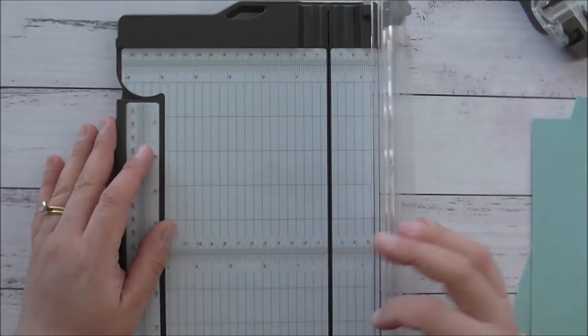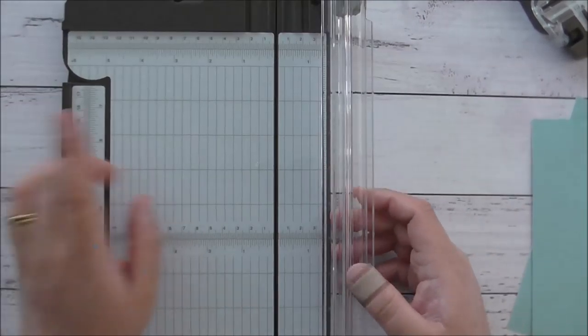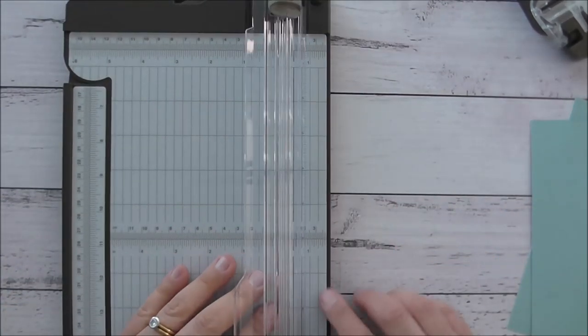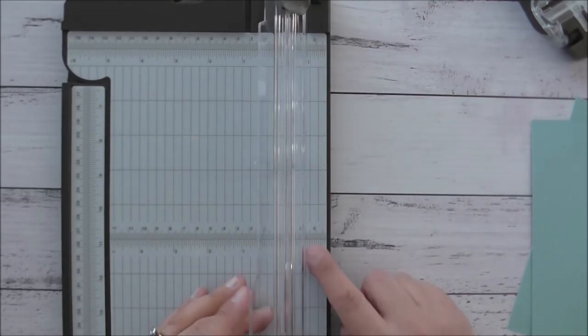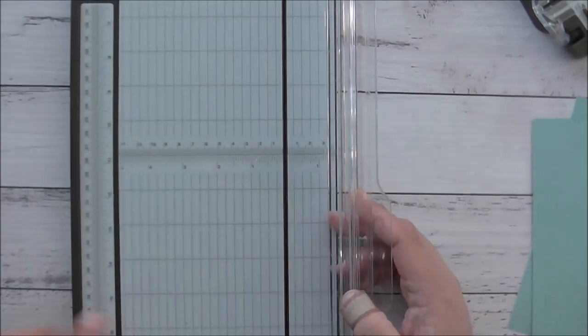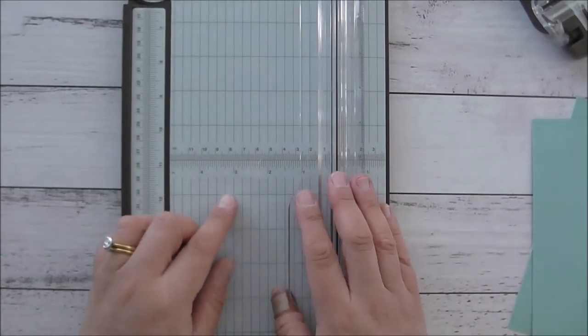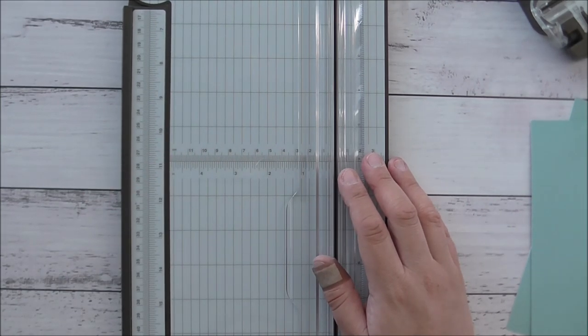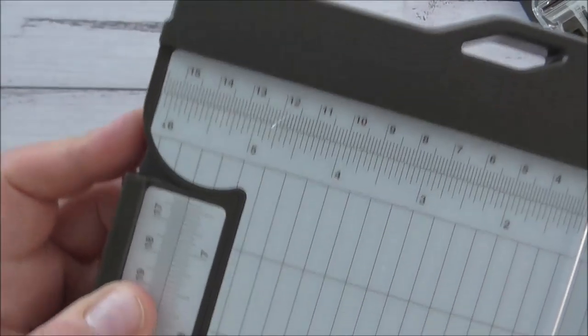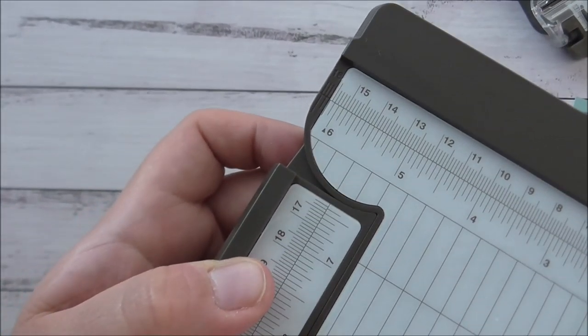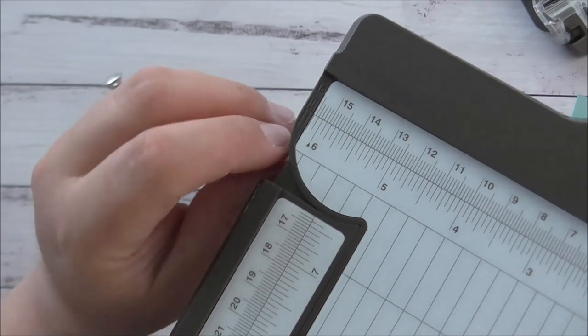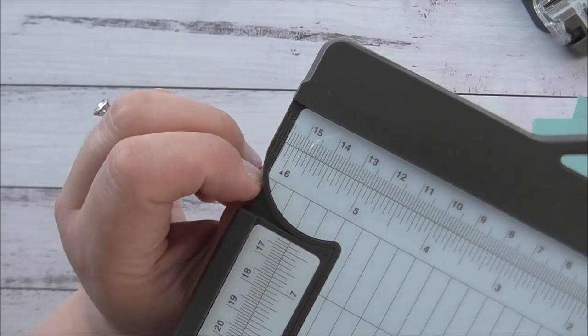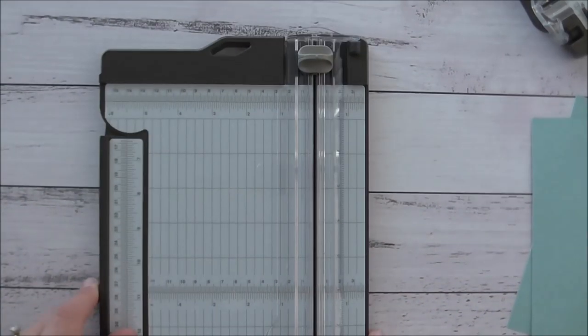But I do love that the measurements here for the smaller pieces go up to an inch and a half. Yeah, so that's great. I like that there's measurements here in the middle as well. I think that's fantastic. So there's good points and bad points. I do love that this trimmer has measurements that go here as well. I think it's fantastic that it has measurements go up to there as well.